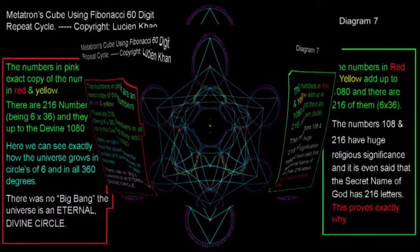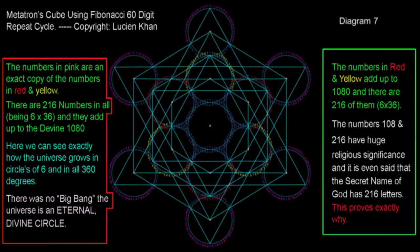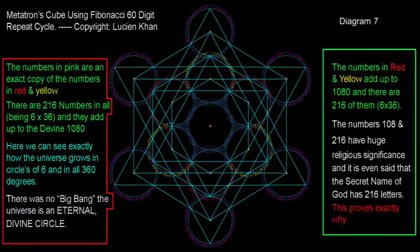Metatron's cube is a blueprint for the universe and contains God's hidden 216 letter signature. From here we can see how the universe grows in increments or cycles of 6 and spreads out into all 360 degrees.